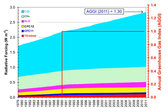In the late 19th century, scientists experimentally discovered that N2 and O2 do not absorb infrared radiation, while water — both as true vapor and condensed in the form of microscopic droplets — and CO2 and other polyatomic gaseous molecules do absorb infrared radiation. In the early 20th century, researchers realized that greenhouse gases in the atmosphere made Earth's overall temperature higher than it would be without them. During the late 20th century, a scientific consensus evolved that increasing concentrations of greenhouse gases cause a substantial rise in global temperatures and changes to other parts of the climate system, with consequences for the environment and for human health.